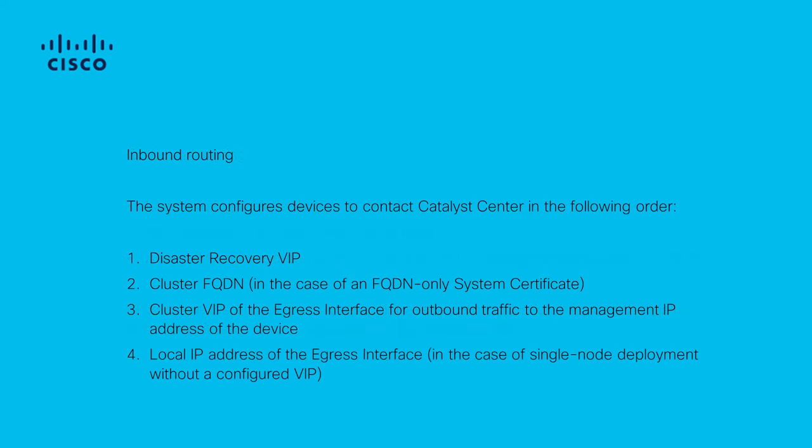Inbound routing is what's configured on managed devices to control how they initiate connections towards Catalyst Center. It is very important that devices and clients access Catalyst Center over the same ingress interface that the outbound routing table points to for their IP address. If a client attempts to connect to the enterprise interface, for example, while the routing table for the client's IP address points to the management interface, then the traffic will be dropped. Therefore, the system uses an outbound routing lookup for each inventory device's management IP to identify the correct interface and then configures the device to use that interface's VIP for connecting to Catalyst Center.